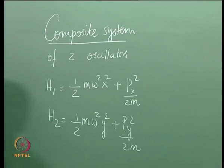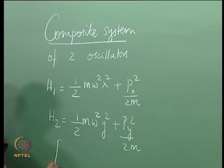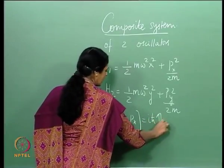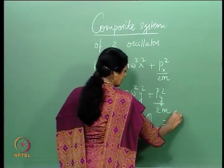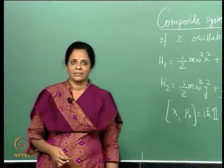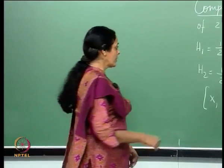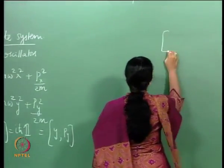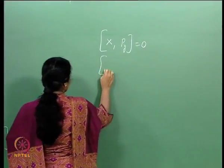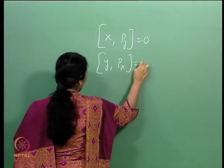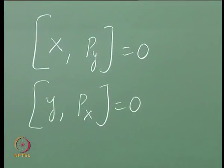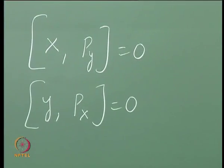These are the 2 independent Hamiltonians. I have the commutator [x, pₓ] = iℏ·I, which is the same as [y, p_y]. Since these are independent oscillators, [x, p_y] = 0. Similarly, [y, pₓ] = 0. That is how I take care of the fact that these are absolutely independent of each other.